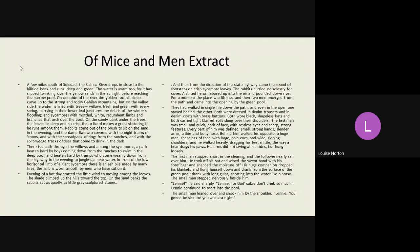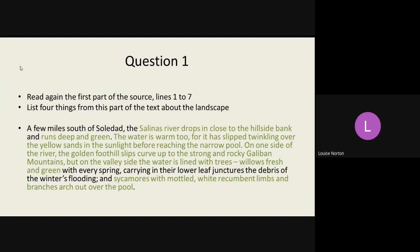You will always be given a fiction extract to read. And today we're going to be looking at an extract from the novel Of Mice and Men. Question 1, you're always directed to a part of the source. So today we're going to be looking at lines 1 to 7. The question will always begin list 4 things.